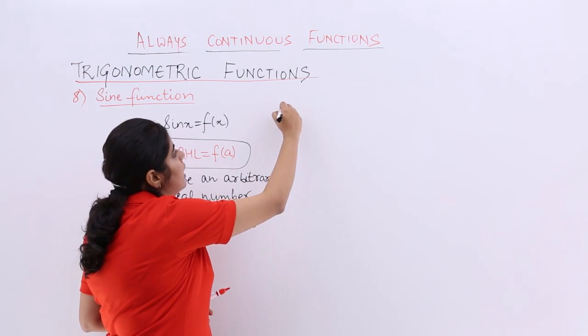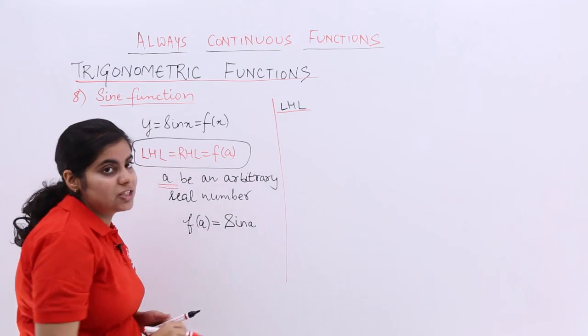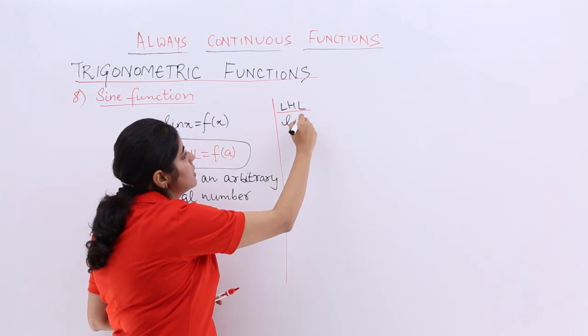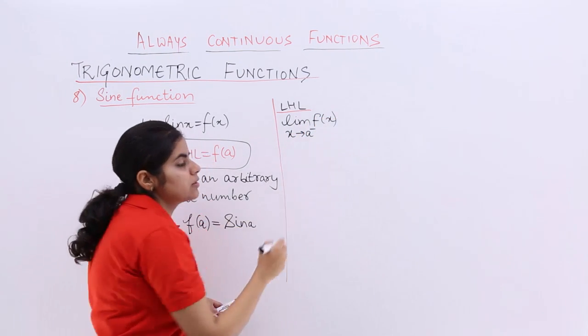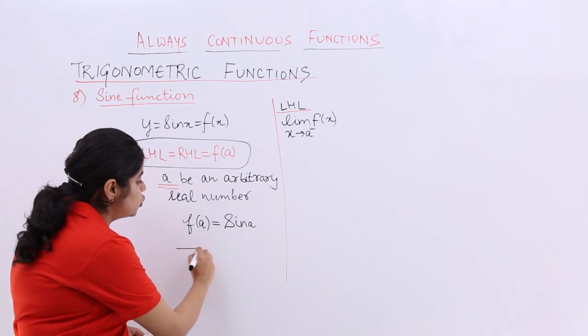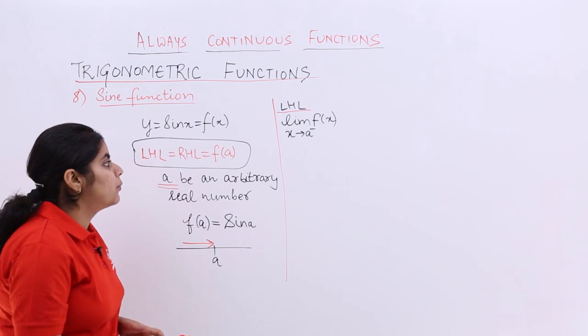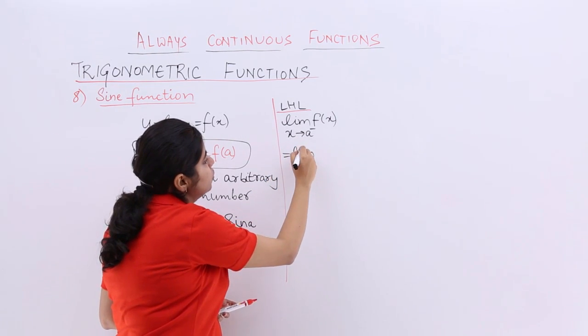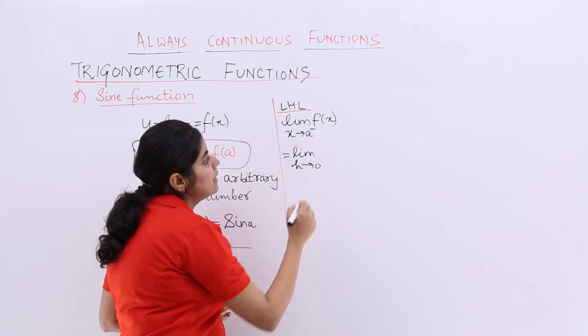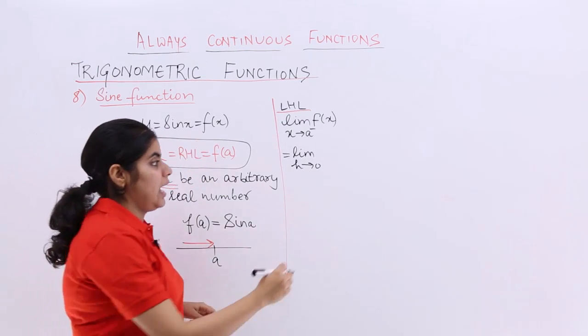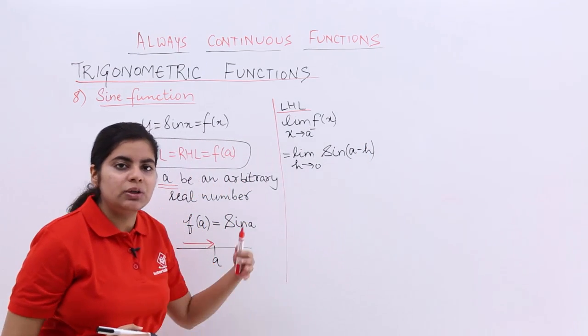Now let me check whether my left hand limit has the same value as f of a. So LHL - let's check. LHL means left hand limit, so it becomes limit x tends to a negative f of x. That means you have to approach a from the left hand side. Now x tends to a negative, if I need to replace it with h, so I put h tends to 0, and in the place of f(x) it becomes sine x, so it is sine(a minus h). You already know how we did this.